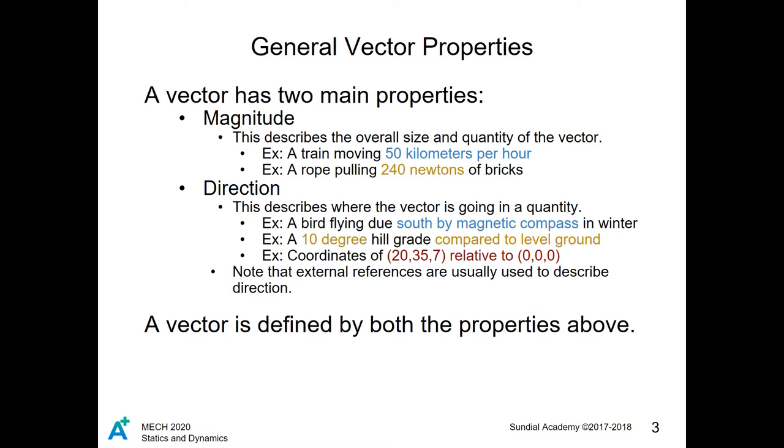The starting point of the vector is commonly described as the tail, while the endpoint is commonly described as the tip. A vector is defined by both the properties above. With these properties, the vectors can be constructed and necessarily defined.